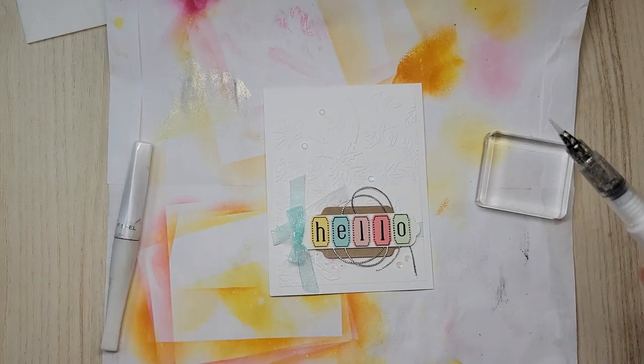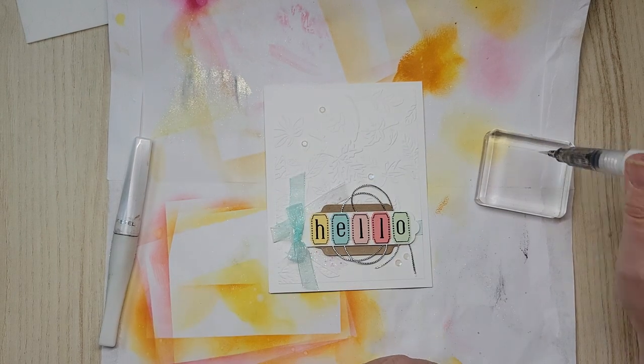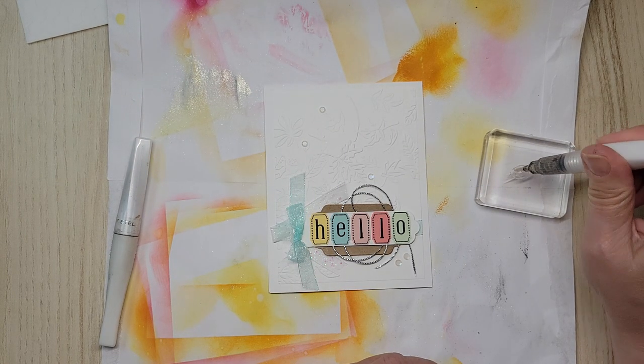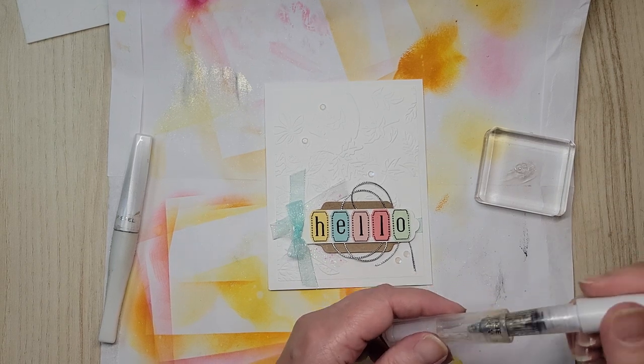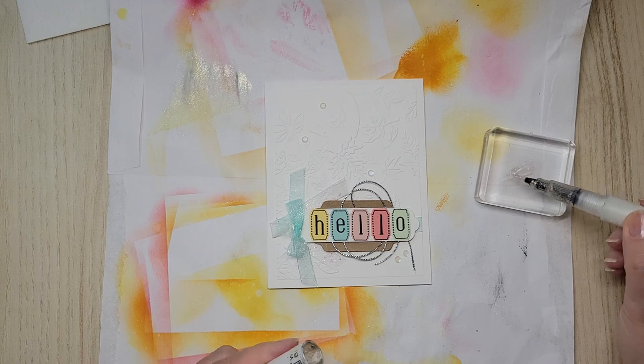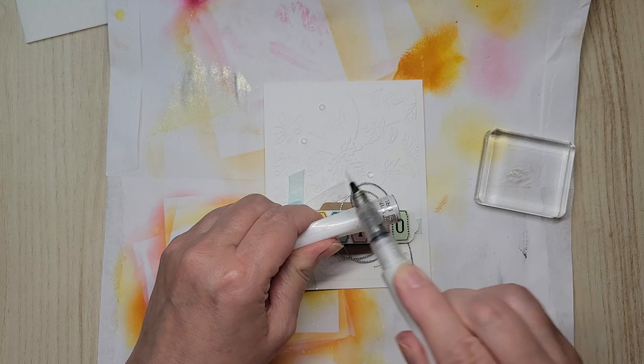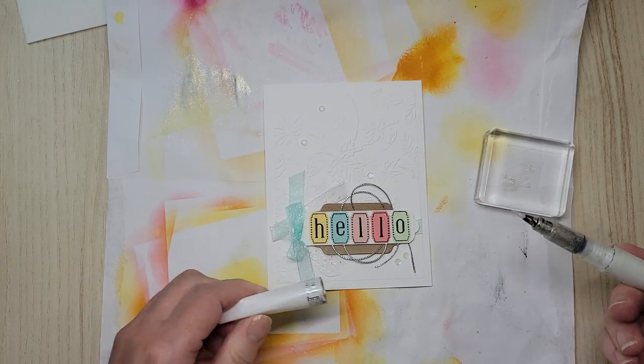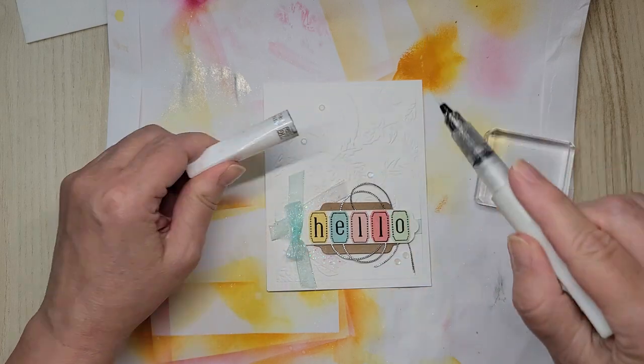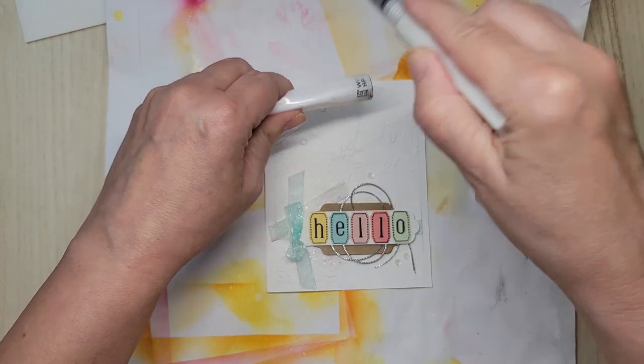This is the new one, I can tell because the lid is clear. I'm just going to take a little bit and put it right here. You don't need a lot. Less is more, you can always get more. And then just pick it up with this one's almost dry. And then just add your shimmer. I won't keep you here while I do the entire card. I can see it landing on the letters already. So, I'll move up this way.